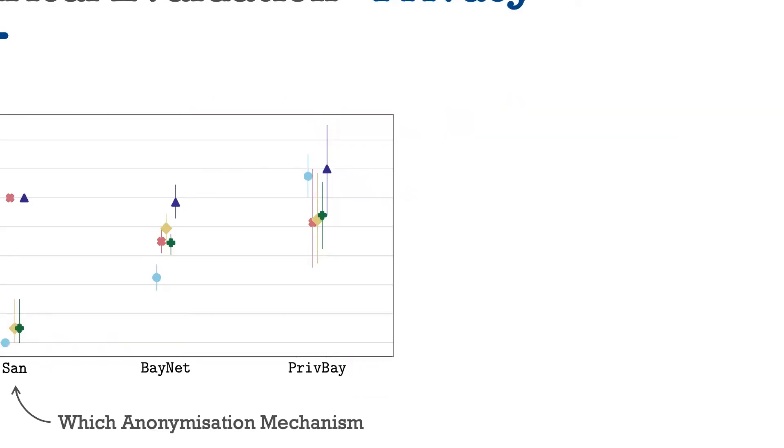Using our framework, we run an empirical evaluation to compare the privacy gain of three different types of anonymization mechanisms. On the very left, we test the privacy gain of a traditional sanitization procedure that uses things like suppression and generalization to protect against privacy attacks. BayNet is a commonly used generative model that produces synthetic data. And PrivBay is a differentially private version of this model. In this plot here, we are showing the expected privacy gain for five specific target records.